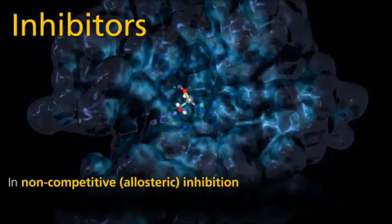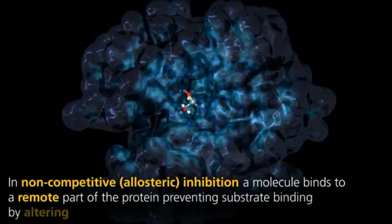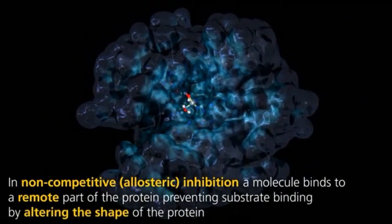In non-competitive allosteric inhibition, a molecule binds to a remote part of the protein, preventing substrate binding by altering the shape of the protein.